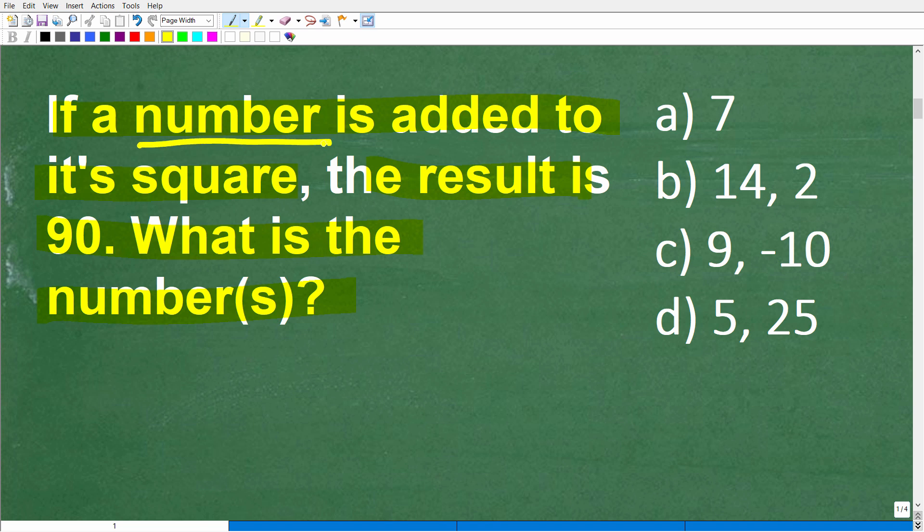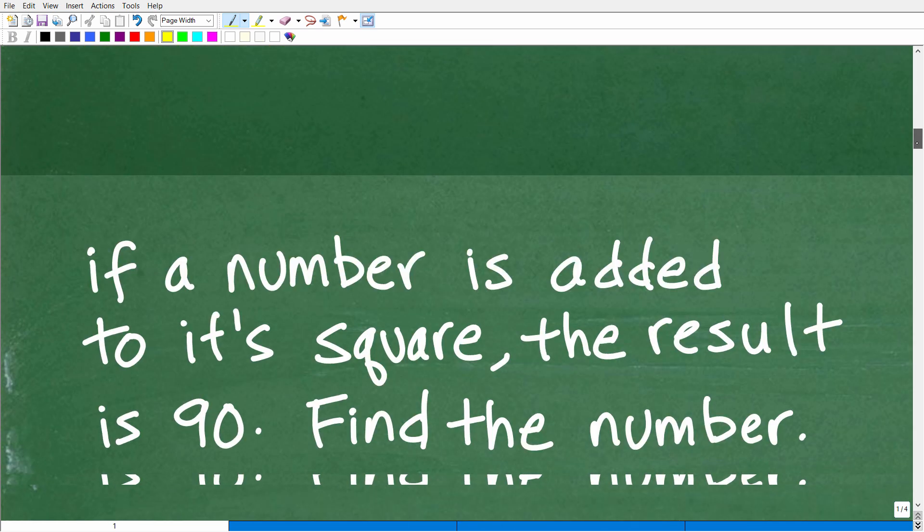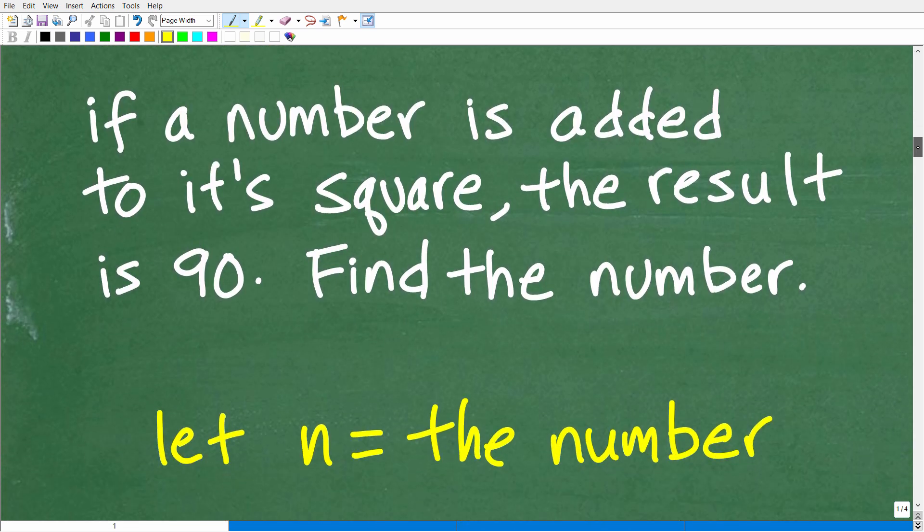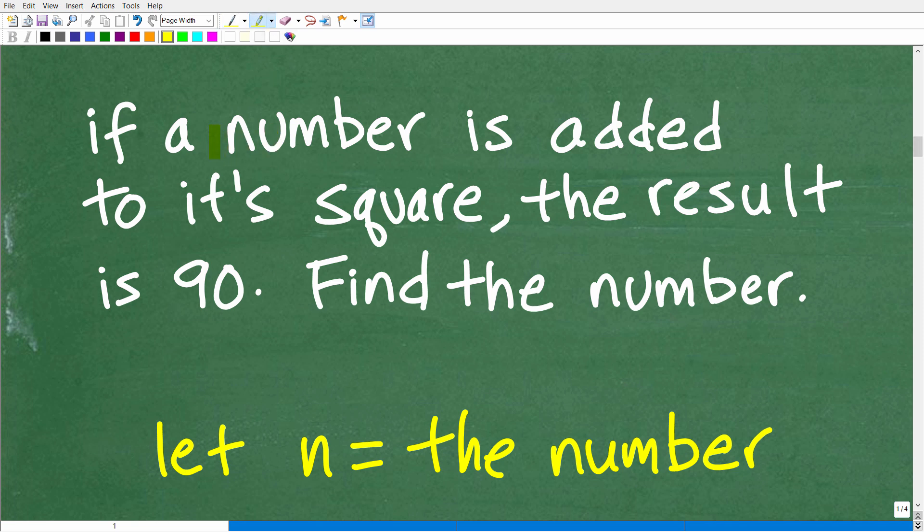We have if a number is added to its square. What does that mean? Let's go ahead and construct some variables. If a number - let's let a variable. A variable in algebra is simply a symbol, oftentimes just a letter, and even more commonly, a lowercase letter. We'll let the letter N represent this number in question.